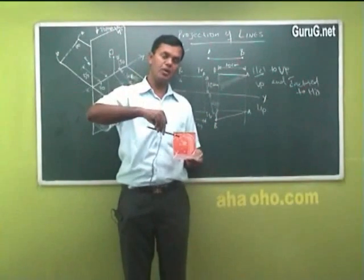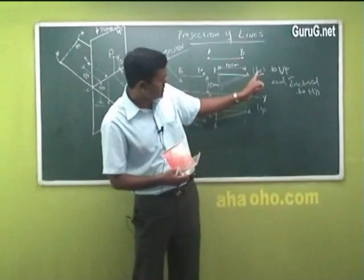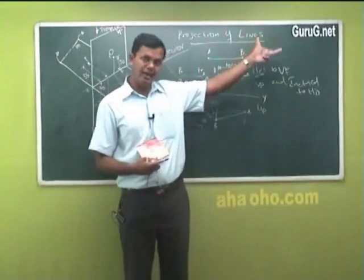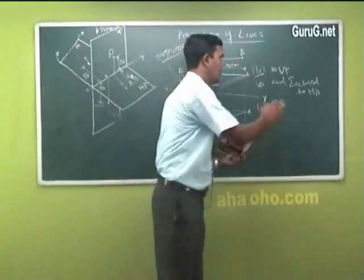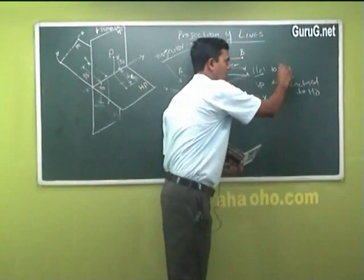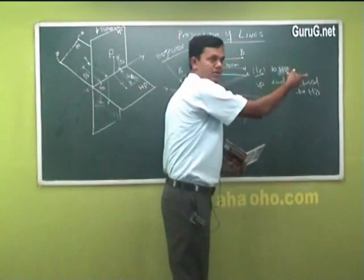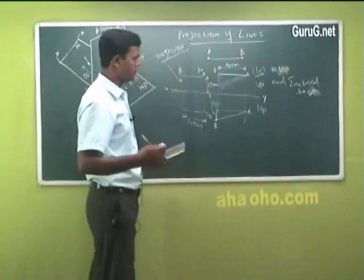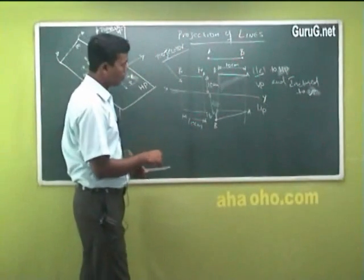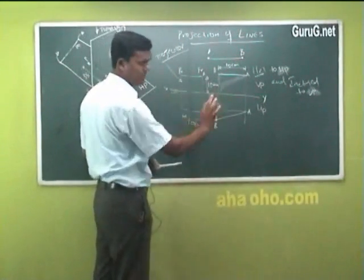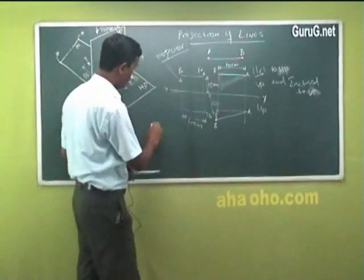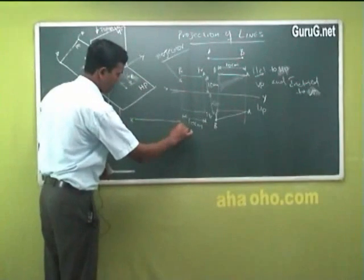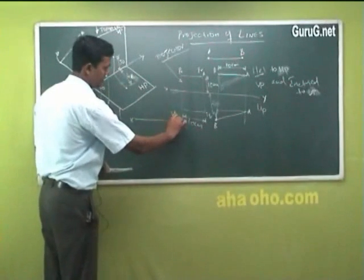What is the other possibility? The next option: parallel to HP and inclined to VP. Now it is your task — you have to think how to draw this. The same setup. I will come to another small sketch so that it is easy to understand VP and HP. What is the setup?